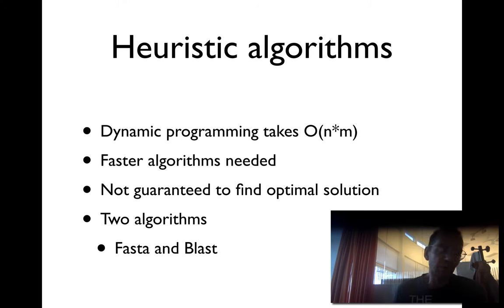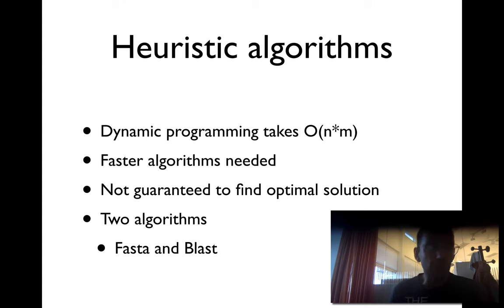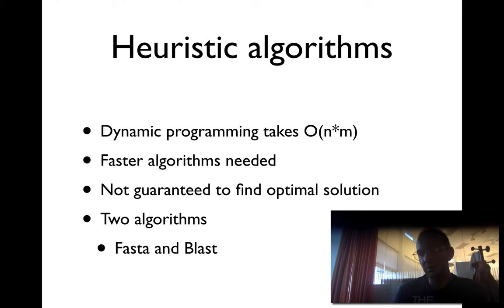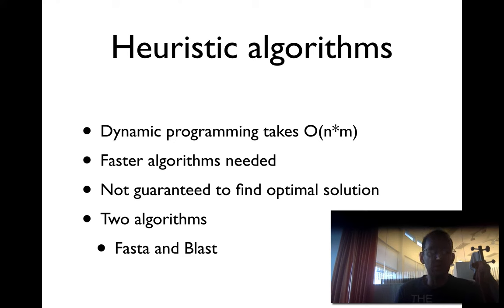One million calculations takes maybe one millisecond, since a computer typically performs around one billion calculations per second. However, if you want to compare a sequence against ten or one million sequences in a database, that means it will take a thousand seconds — about 20 minutes. This may be acceptable, but if you want to compare a thousand or a million sequences against each other, that would be a million times longer and would not be feasible.